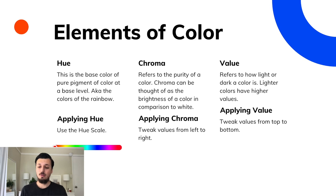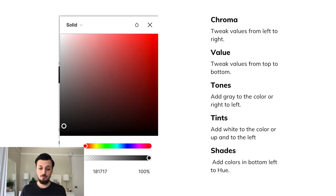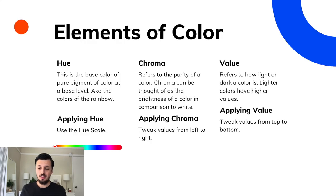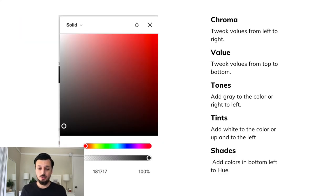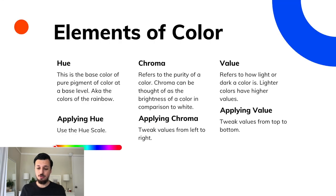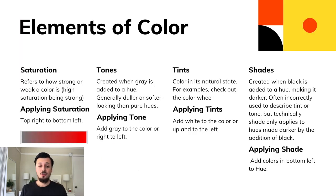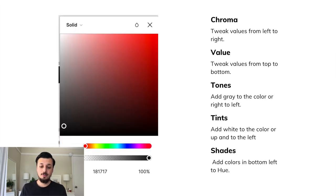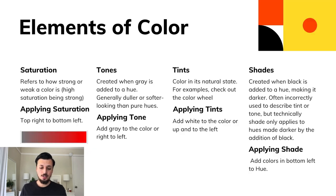With value, it refers to how light or dark a color is. Lighter colors have a higher value. In order to do that, you tweak values from top to bottom. If you were to go lighter, you would go upwards on the scale. Now saturation refers to how strong or weak a color is — a high saturation is strong. When applying saturation, you go from top right to bottom left on this scale. Low saturation is on the left, high saturation on the right.